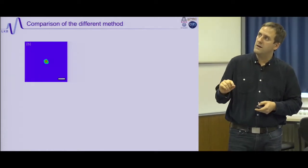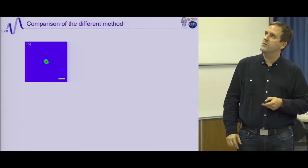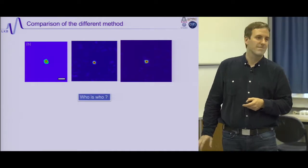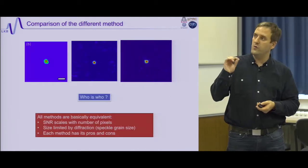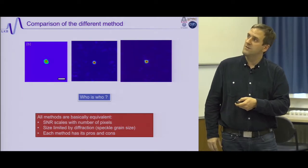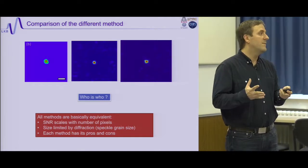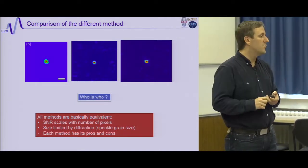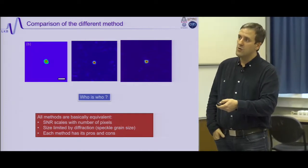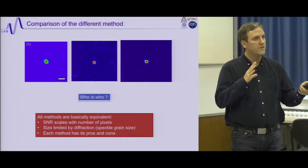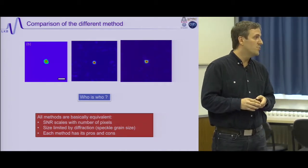To summarize, the three methods — phase conjugation, optimization, and transmission matrix — give basically equivalent results. The three foci look very similar and have the same signal-to-noise properties scaling with the number of pixels. The size is always diffraction-limited. The methods differ in experimental constraints, so which you choose depends on your application. An important advantage of the transmission matrix: you can focus to any point without re-running an optimization, or focus to multiple positions simultaneously with reduced efficiency.